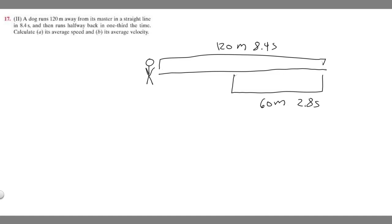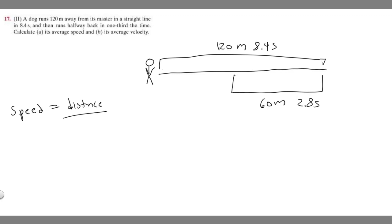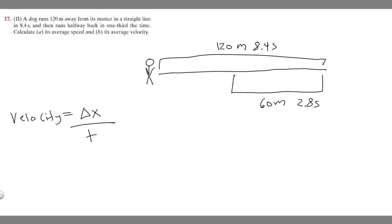This diagram will help us solve parts A and B. Part A asks for average speed, and part B asks for average velocity. Speed equals the total distance traveled over the total amount of time. Speed and velocity get mixed up, so make sure you know the difference. Velocity is your change in position over your total time traveled. The difference is: velocity uses change in position, while speed uses total distance.